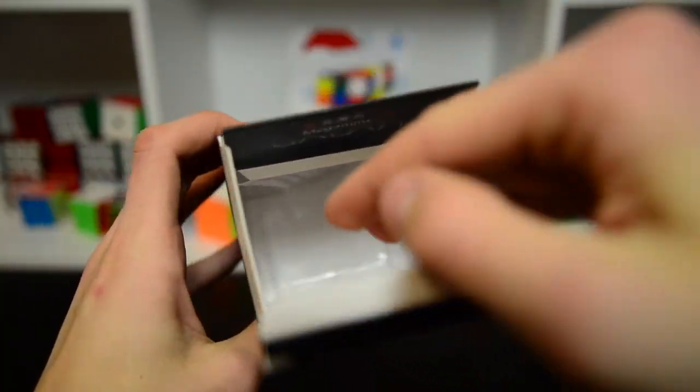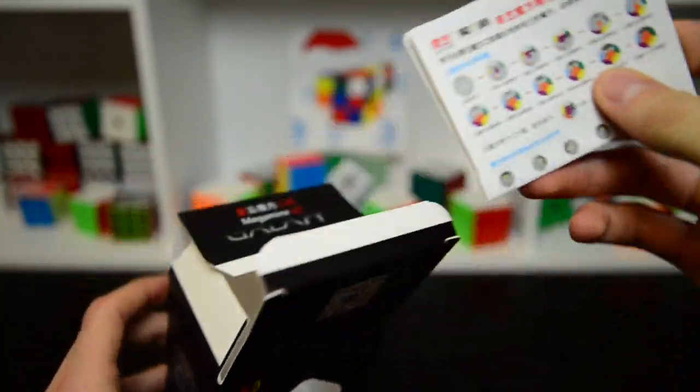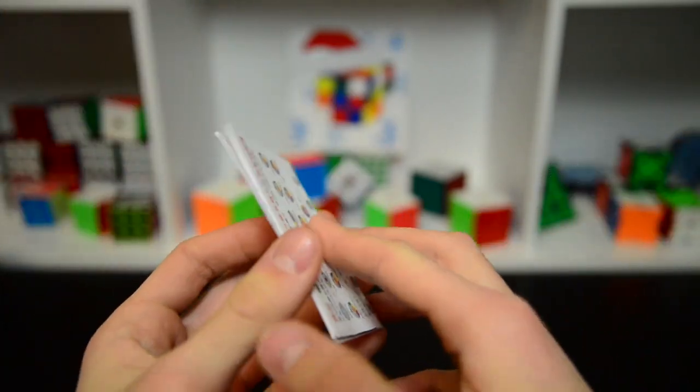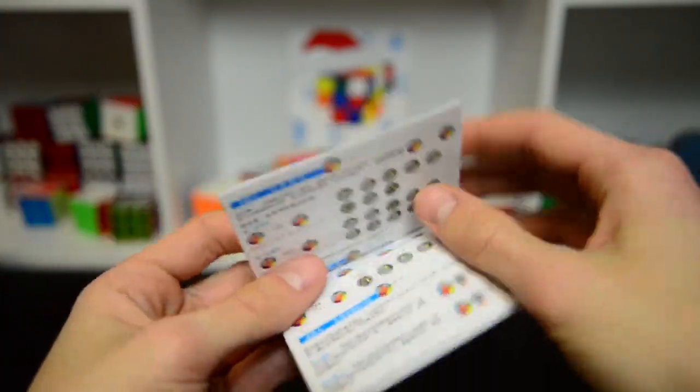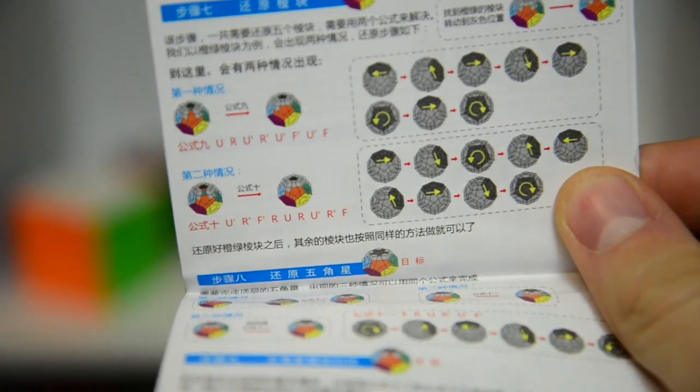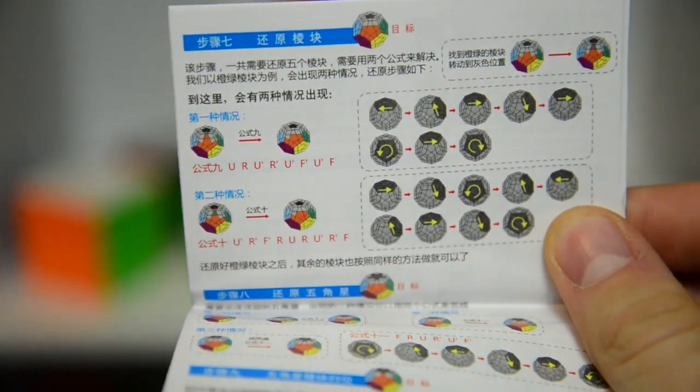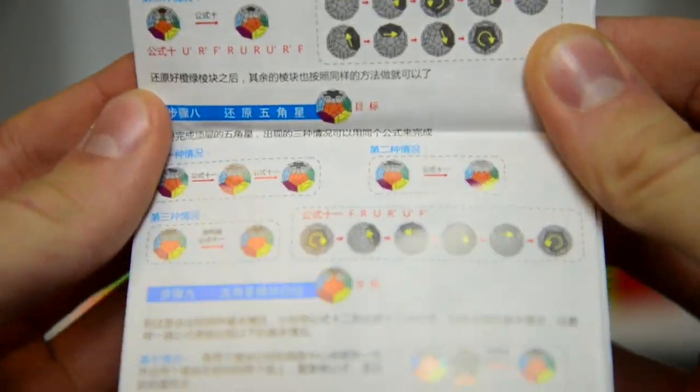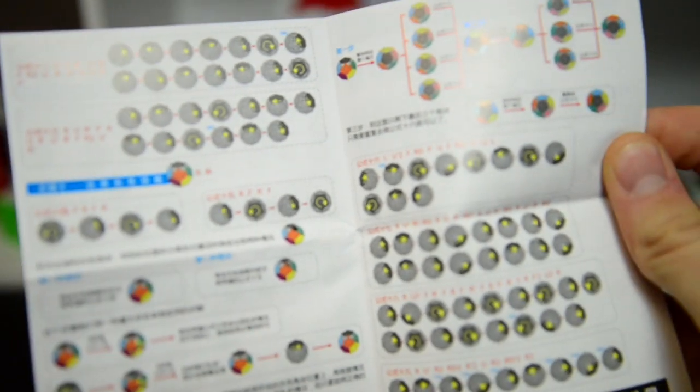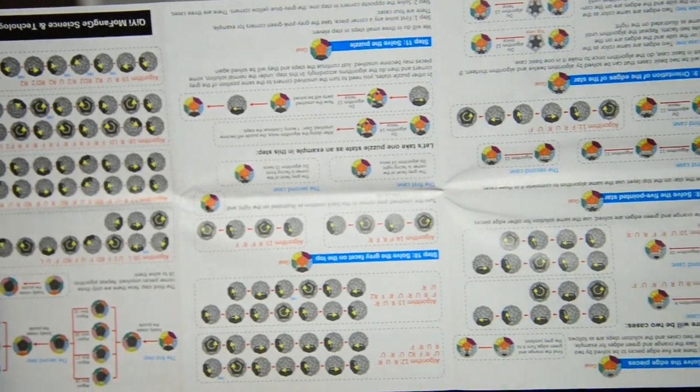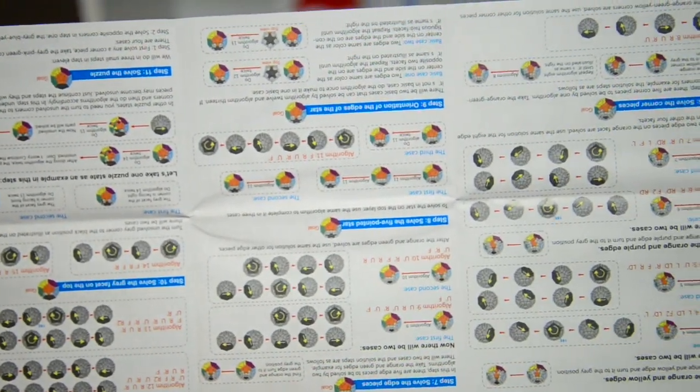Also in this box we have a little Megaminx pamphlet and there is quite a bit of information in here. Wow! I guess this is the full tutorial on how to solve the Megaminx. Oh my god! There is a lot of stuff here. There is basically a ton of algorithms. So let's not bother with the pamphlet anymore. Let's get right into the Galaxy 2 Megaminx.